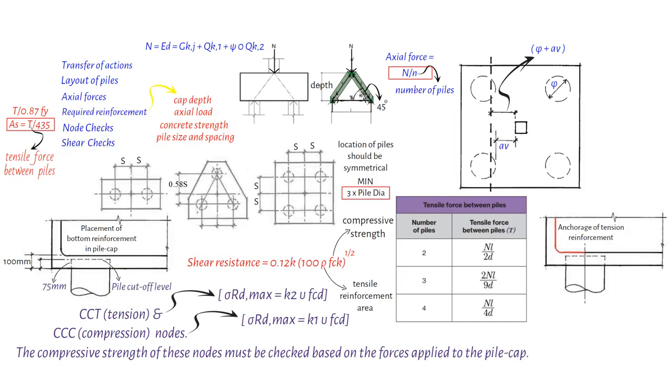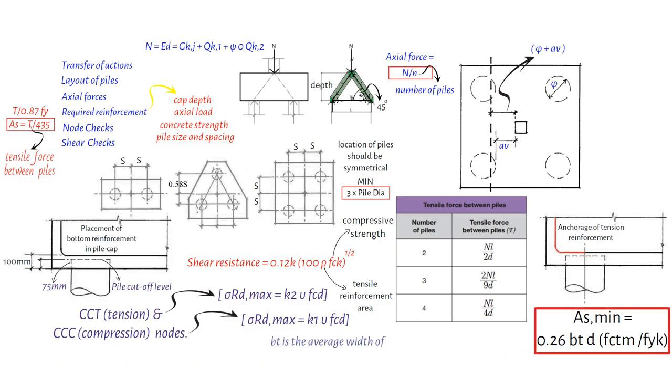Also, it's worth mentioning that the smallest size of reinforcement in a pile cap must be 8 mm, and the minimum tension reinforcement needed can be calculated using the formula, where BT is the average width of tension area over the piles, gives the effective depth of pile cap, and FCTM is the concrete's strength under tension.